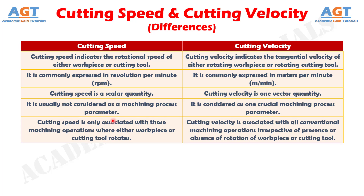Number 5: cutting speed is only associated with those machining operations where either the workpiece or cutting tool rotates, whereas cutting velocity is associated with all conventional machining operations, irrespective of the presence or absence of rotation of the workpiece or cutting tool.